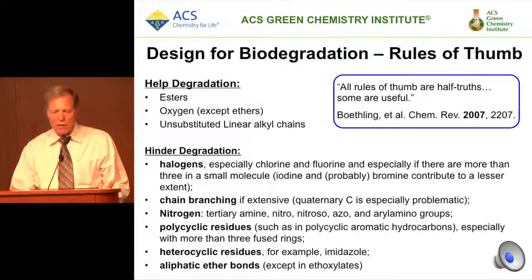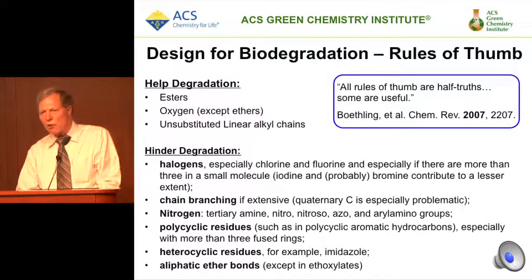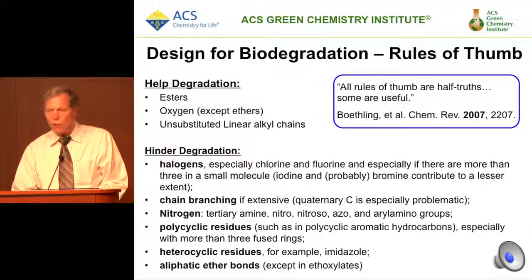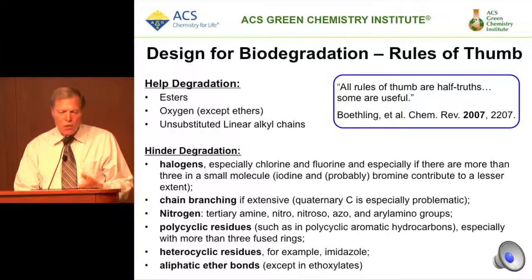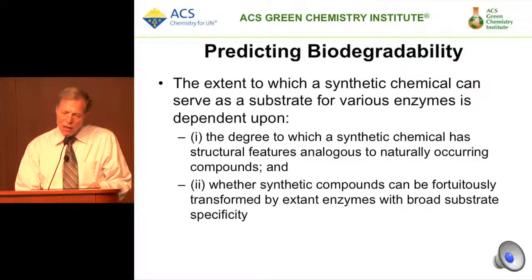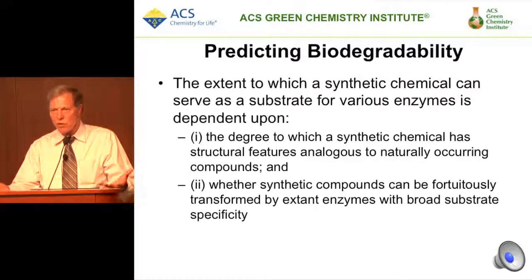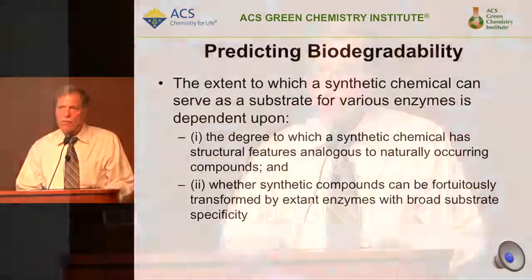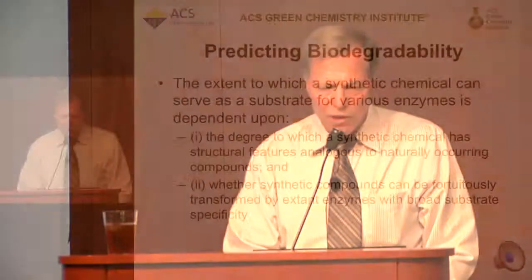Design for degradation — there are rules of thumb out there, and Bob Boethling and others who have been very active in this field have helped compile these lists. There are functional groups that facilitate degradation and other groups that hinder degradation — these are also called expert systems. The extent to which something can biodegrade is typically a function of how much of a natural product it resembles. Things like lignin-degrading fungi — white rot fungi like Polyporus versicolor — are great at degrading other types of compounds because the enzymes they release are good at oxidizing a broad range of substrates.